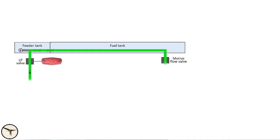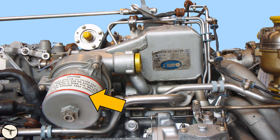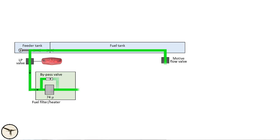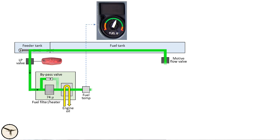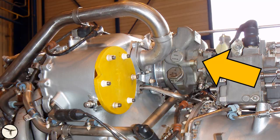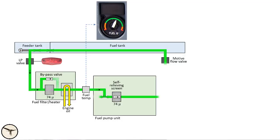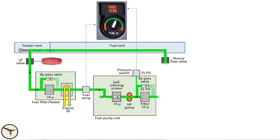Now for the engine fuel system. The engine receives fuel from the fuel collector tank via the LP valve, then enters a filter and heater unit. The filter mesh size is 74 microns; if clogged, fuel flows through a bypass valve. The fuel then passes a fuel heater that exchanges heat with engine oil, with a temperature sensor at the outlet. Next the fuel enters the fuel pump unit, passing a second 74-micron filter before the pump, and then a 10-micron filter after the pump. If this fine filter clogs, fuel pressure increases — at 25 psi a fuel clog alert is triggered, and at 45 psi a bypass valve opens.